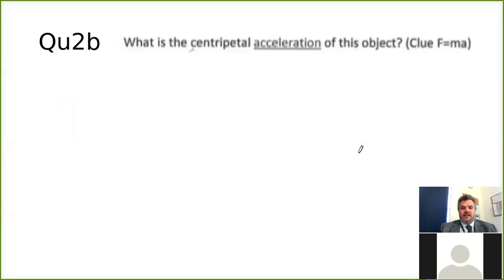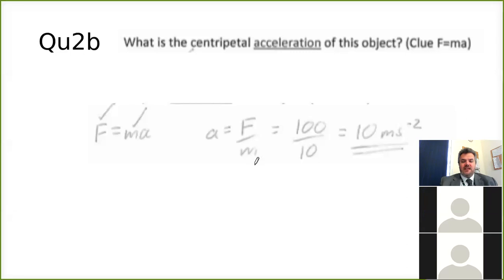So the next one is what is the centripetal acceleration of this object. So this is part b. Actually the acceleration you get that from force equals mass times acceleration. Rearrange to make acceleration the subject. So the force from number four is 100 divided by 10 leaves you with 10 meters per second squared. That's how you do that one. It's a fairly simple one. Hopefully you're all familiar with that formula.